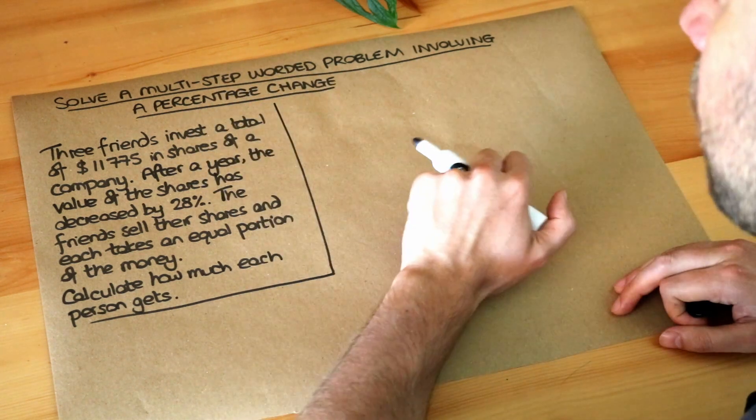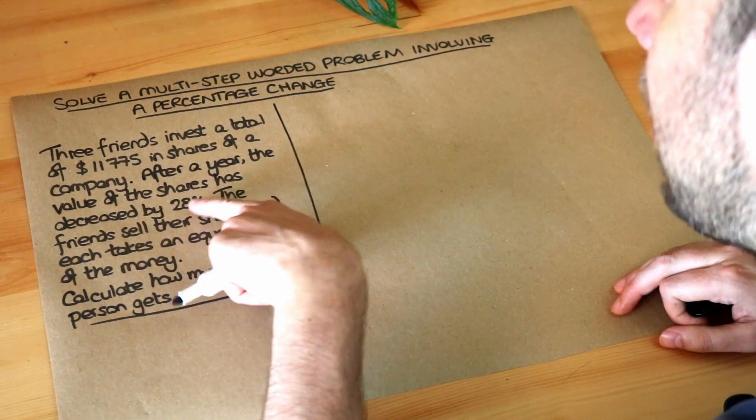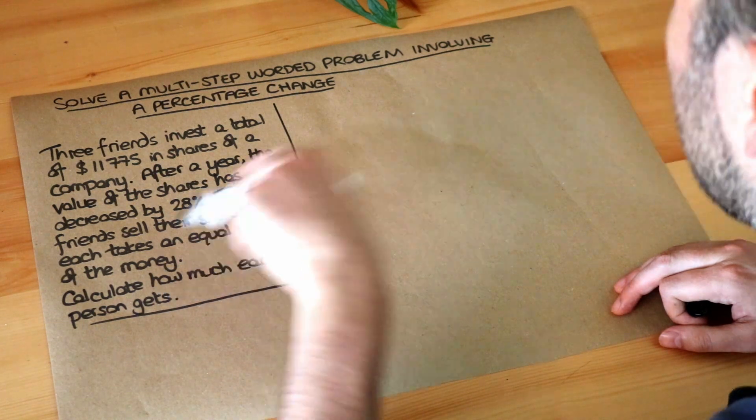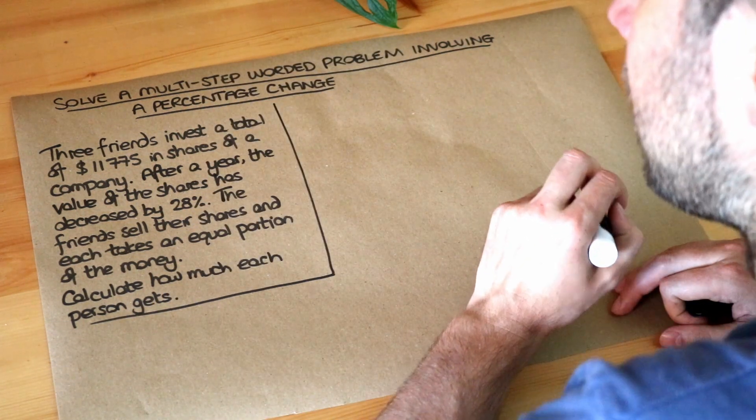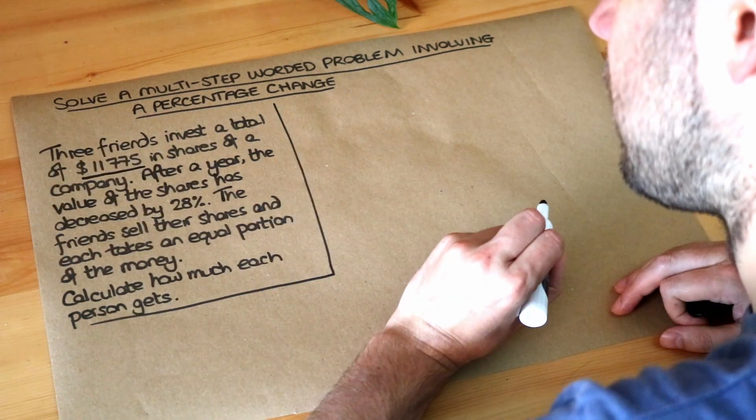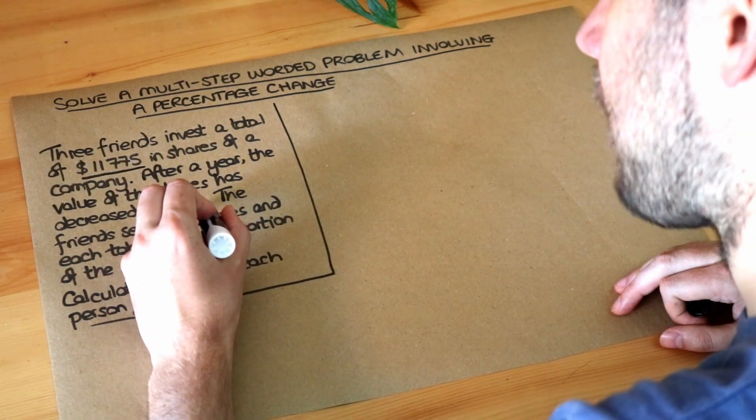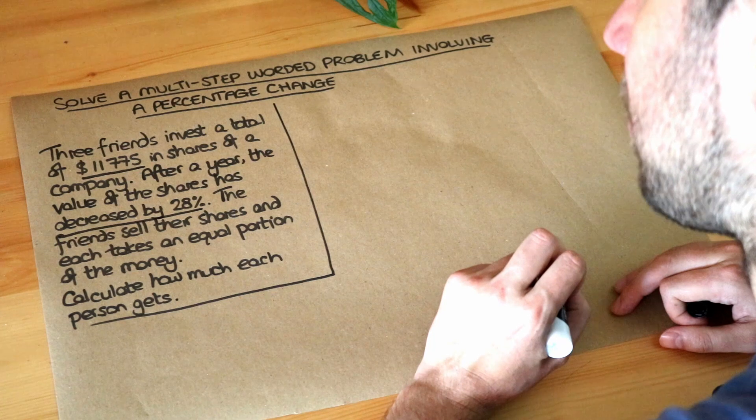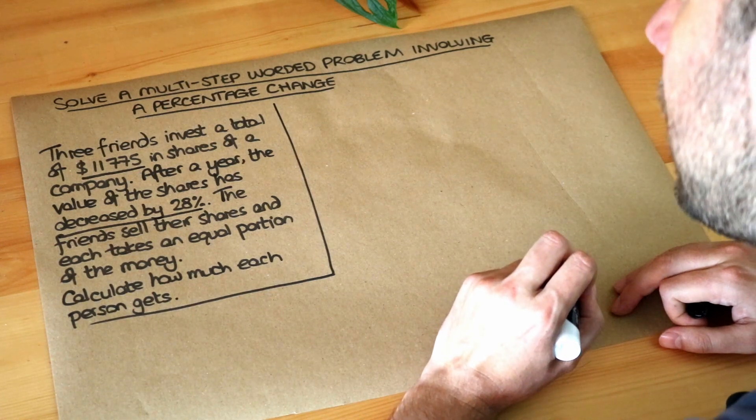Now with these kind of problems, we have an amount that's going to increase or decrease by a percentage, and then we're going to do something with that number. So let's take that starting amount, and we're saying that value decreased by 28%, and let's find out the new value.